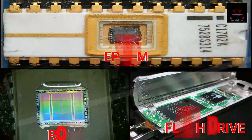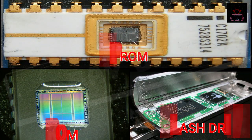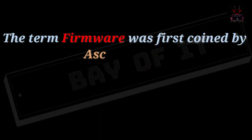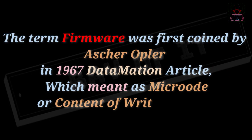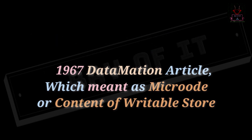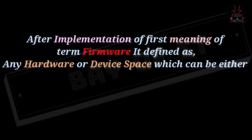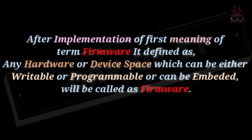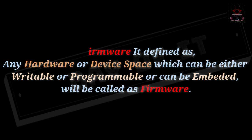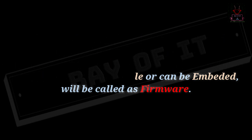Now the question is, where did this word come from? The term firmware was actually used by Asher Opler in a 1967 Datamation article, where it actually meant microcode or content of a writable store. Later, after implementing this term, they came up with a new definition: any hardware or device space which is either writable, programmable, or can be embedded, will be firmware.